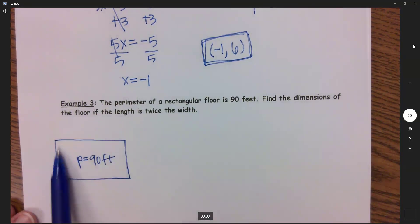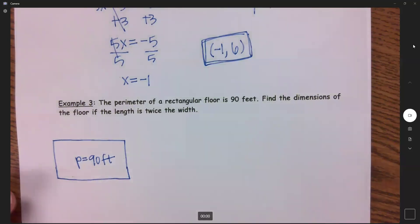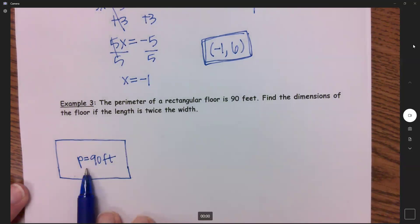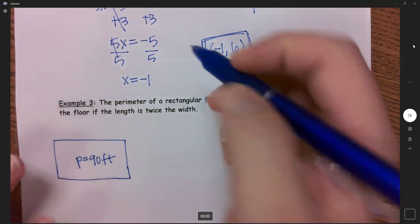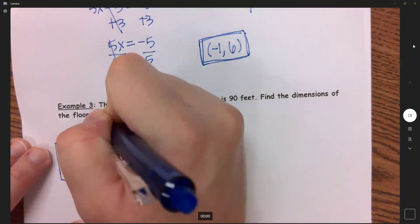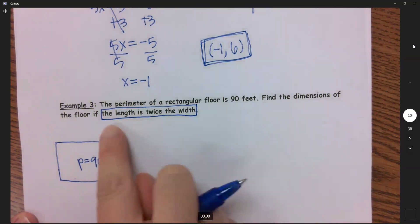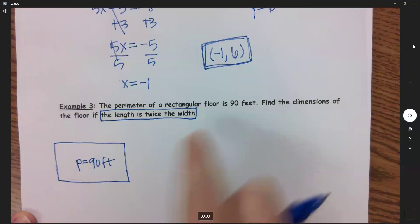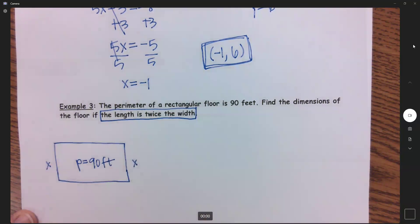Hopefully you said the distance around. If you think of this as a backyard, this is the fencing that we need. And so it goes on to say that after the perimeter is 90 feet, it says find the dimensions of the floor if the length is twice the width. Which one of these do we not know anything about? I don't know anything at all about this width. So these two widths here are my starting point. These are my x.